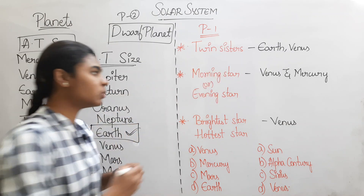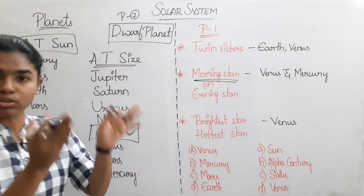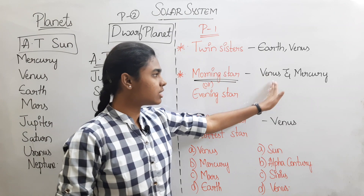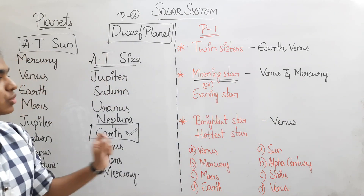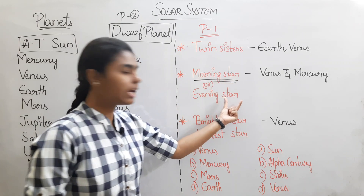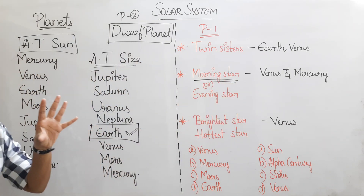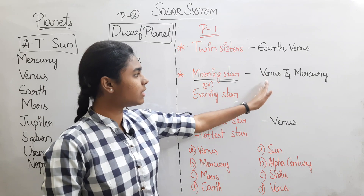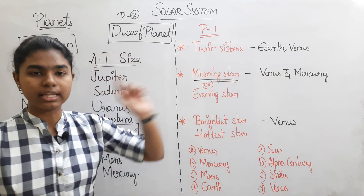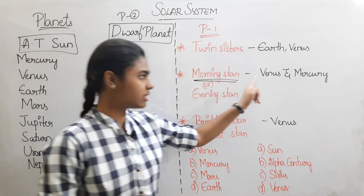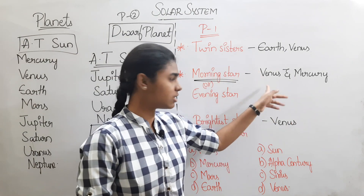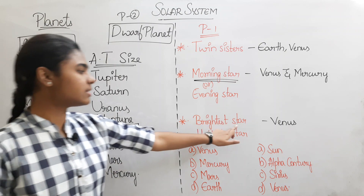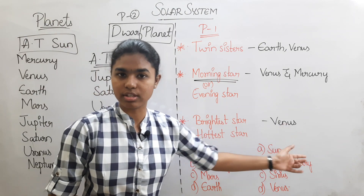Venus is called the Morning Star and also the Evening Star. If the question asks about the brightest planet or the hottest planet, the answer is Venus. Venus and Earth are called Twin Sisters; if asked separately, the answer is Venus.